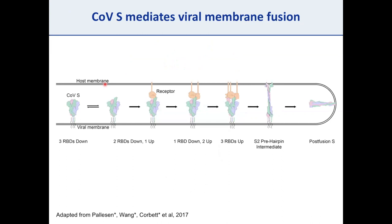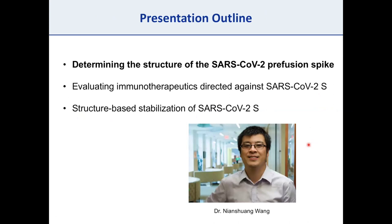Based on these observations, we developed a model for coronavirus spike-mediated viral membrane fusion. On the viral surface, spike exists as a metastable pre-fusion trimer that transiently samples the RBD-up conformation. Host cell receptor binding traps one RBD up, allowing subsequent RBDs to bind, gradually destabilizing spike. The S1 subunit is shed, the hydrophobic fusion peptide from S2 inserts into the host cell membrane forming an unstable pre-hairpin intermediate, which collapses to the post-fusion conformation, bringing together viral and host cell membranes to form a fusion pore through which the viral genome enters.